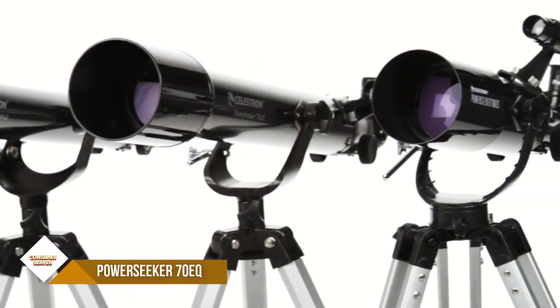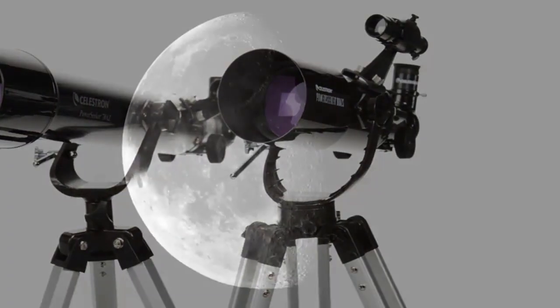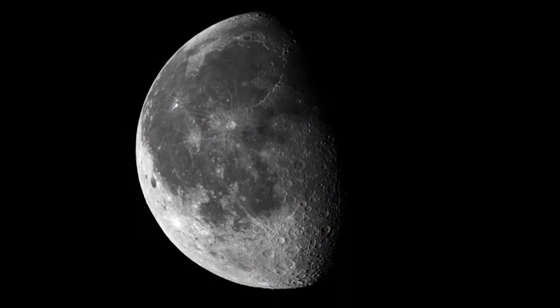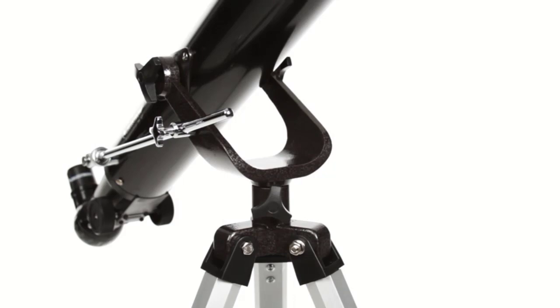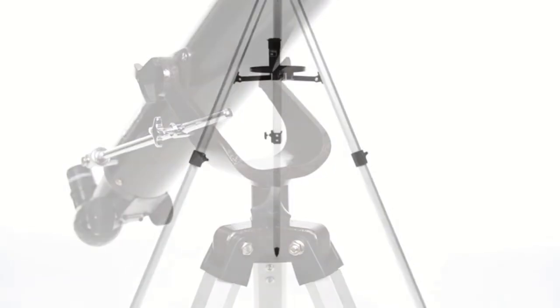Included in the package are two eyepieces, 20mm and 10mm, a full-height tripod, and a starpointer red dot finderscope. To get you started, you'll also receive a free download of one of the top-rated astronomy software programs.